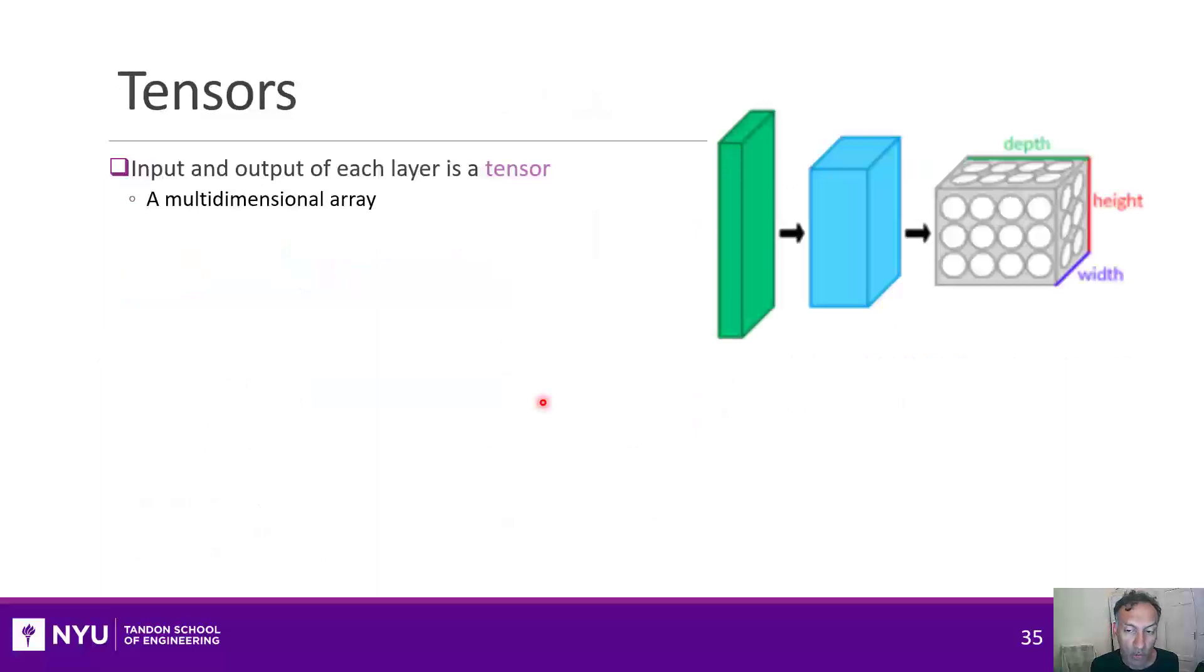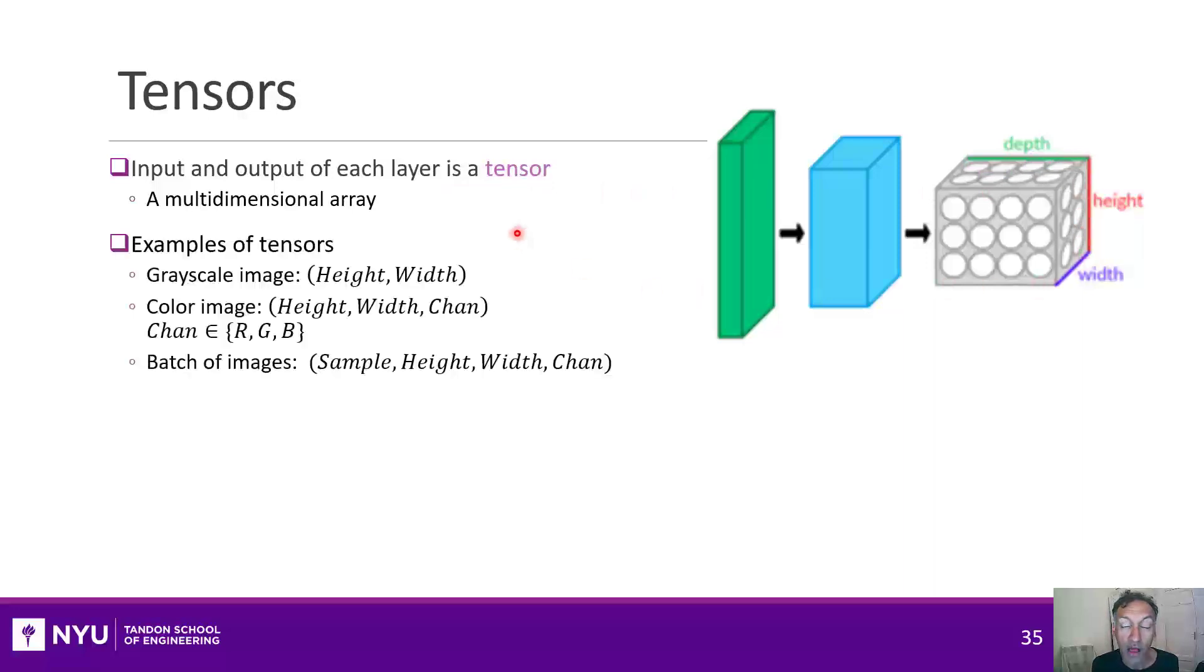So before we do that, we have to understand something called a tensor. And a tensor, in convolutional neural network lingo, is really just a multidimensional array. So for example, an array of numbers that could have, say, a depth, height, and width.